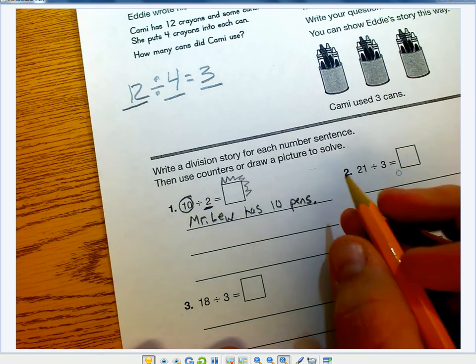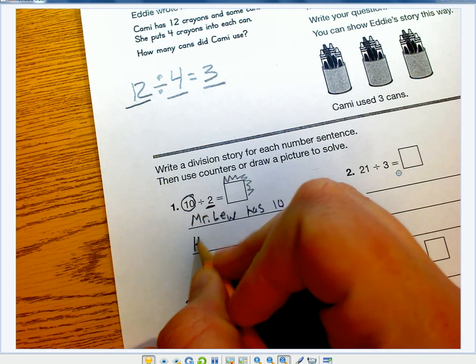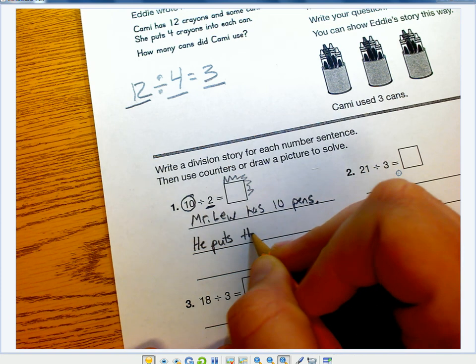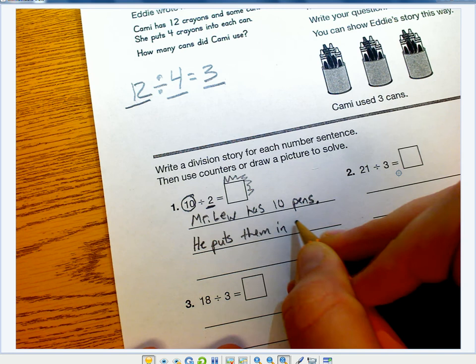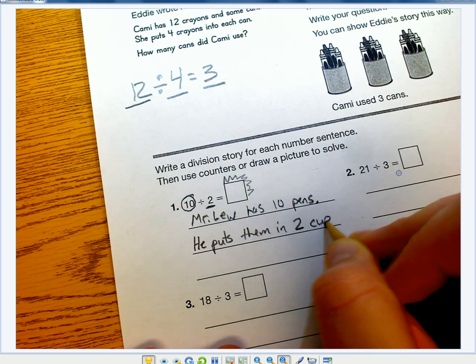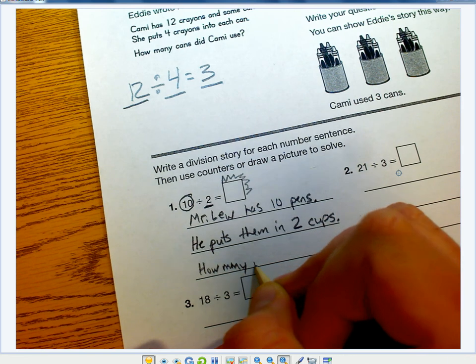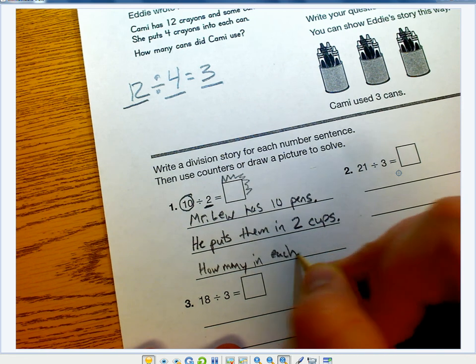Mr. Liu has 10 pens. He puts them in 2 cups. How many in each cup?